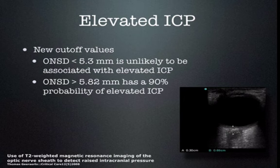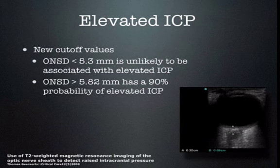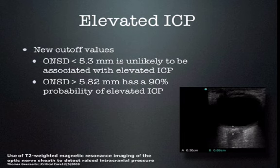A better cutoff value would be 5.3, 5.6, or 5.82 millimeters depending on which literature you reference. One MRI-based study found that an optic nerve sheath less than 5.3 mm is unlikely to be associated with elevated intracranial pressure, while greater than 5.82 mm has a 90% chance of being associated with elevated ICP. Using ROC curves, the value is 5.6, which maximizes sensitivity and specificity. A higher cutoff value gives more specificity; a lower value gives more sensitivity. I generally use about 5.6 as my cutoff, but you must look at the clinical scenario.